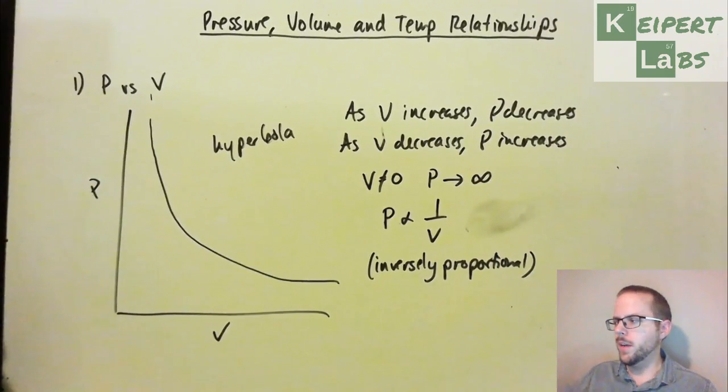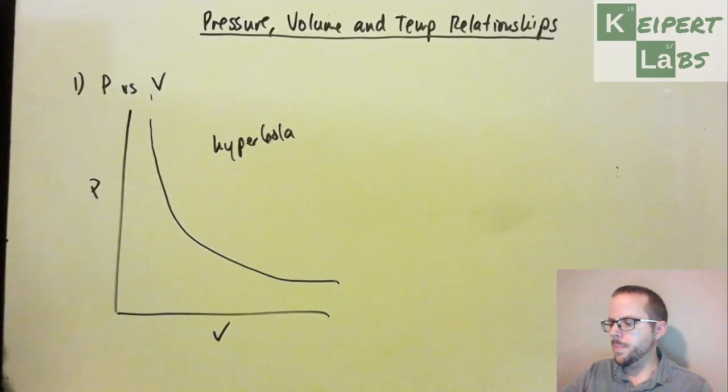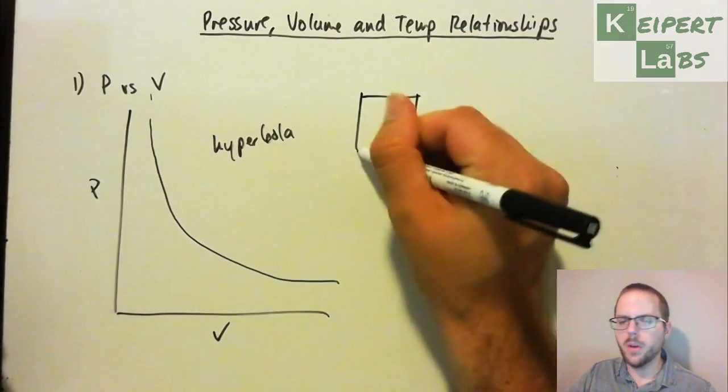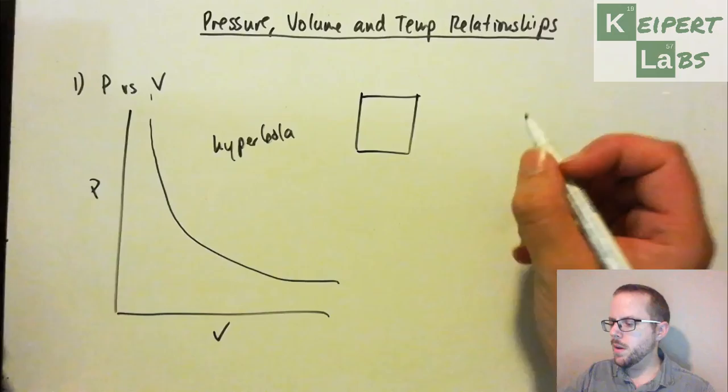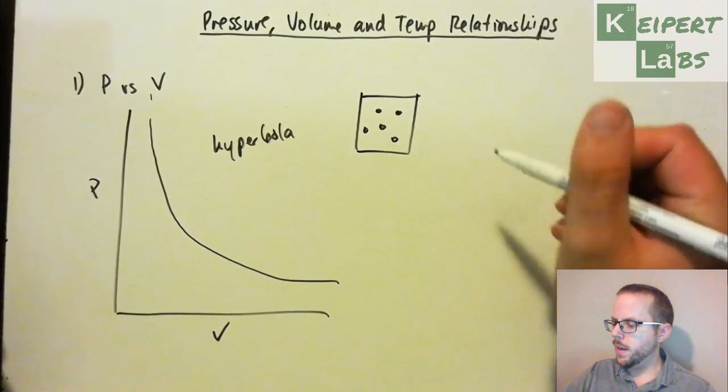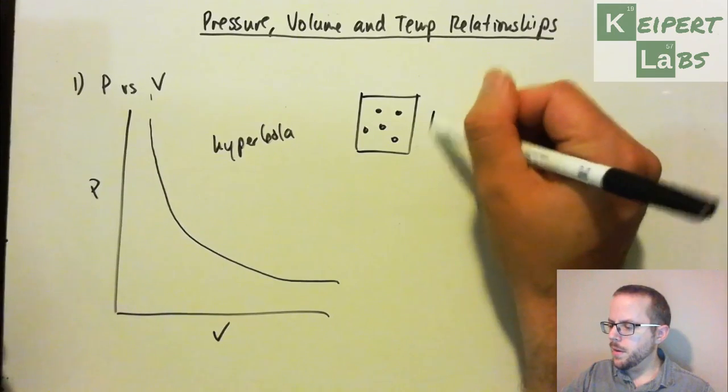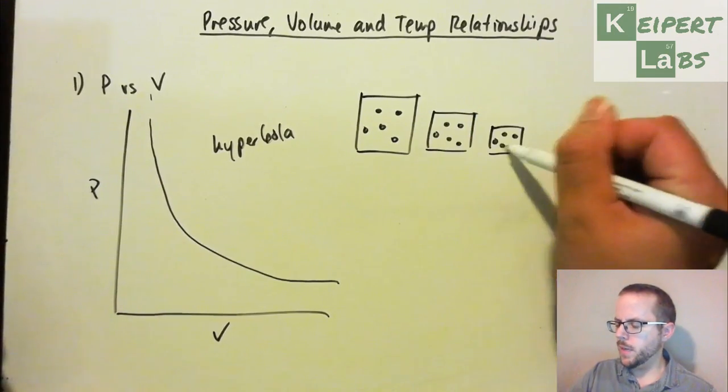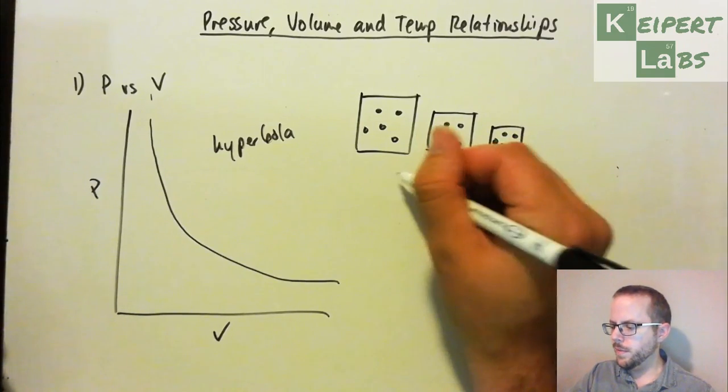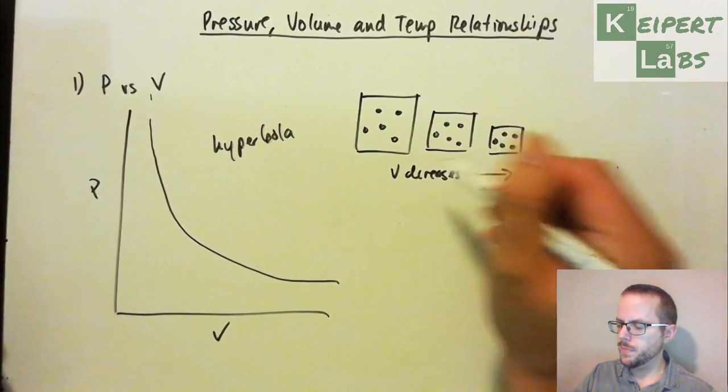So let's have a little look at the why. I want you to imagine we have boxes with the same number of particles in them, that get smaller and smaller. That is, volume is decreasing as we're going this way.